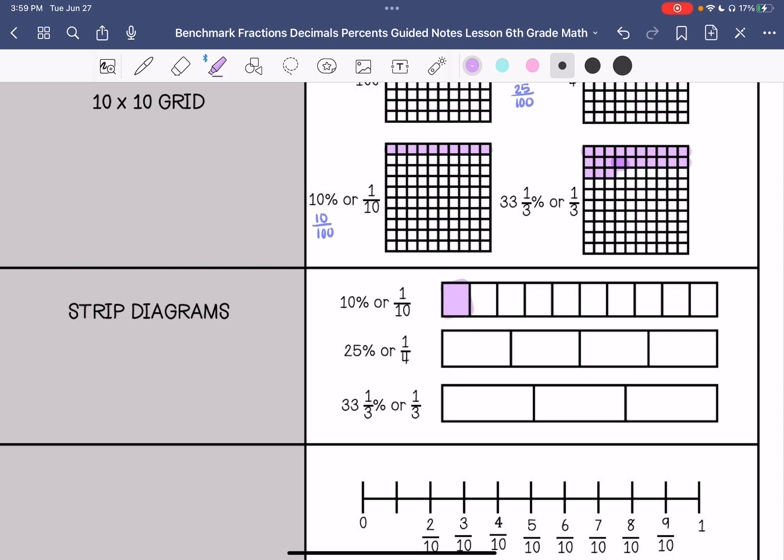25% or one-fourth is one out of four. And then 33 and a third percent or one-third is one out of three.